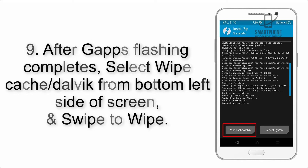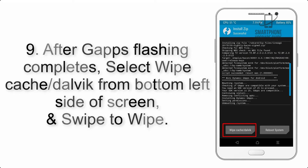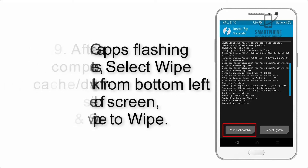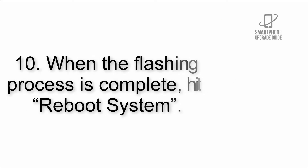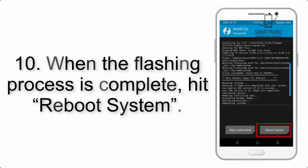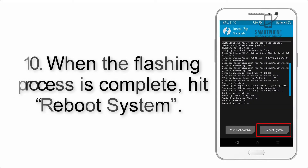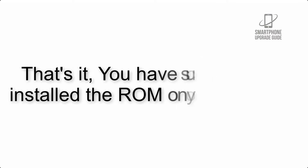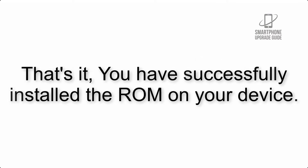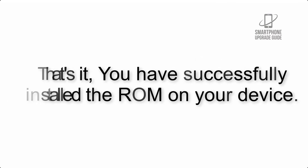Step 8: Flash the GApps zip package in the same manner. Step 9: After GApps flashing completes, select Wipe Cache and Dalvik from the bottom left side of the screen and swipe to wipe. Step 10: When the flashing process is complete, hit Reboot System. That's it — you have successfully installed the ROM on your device.